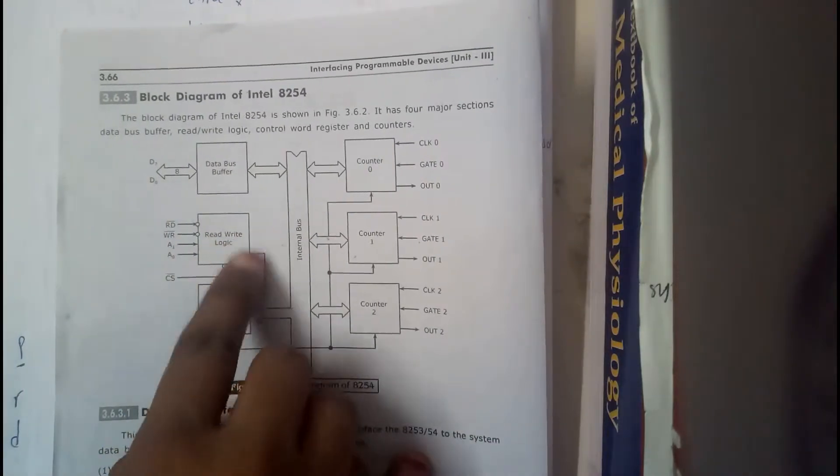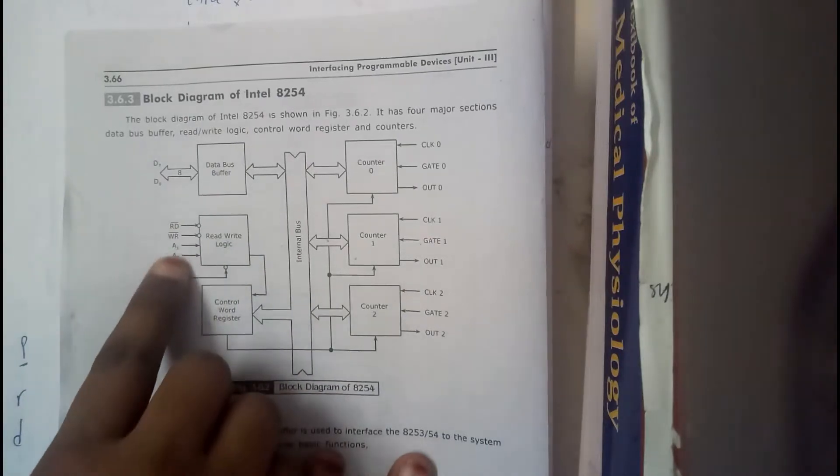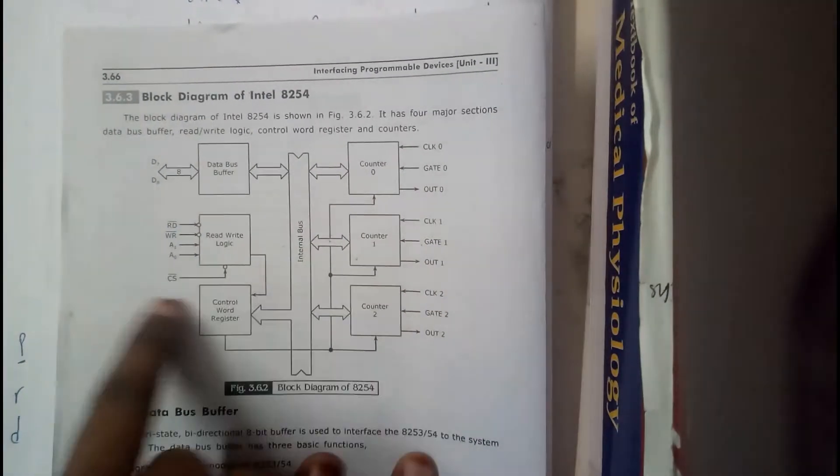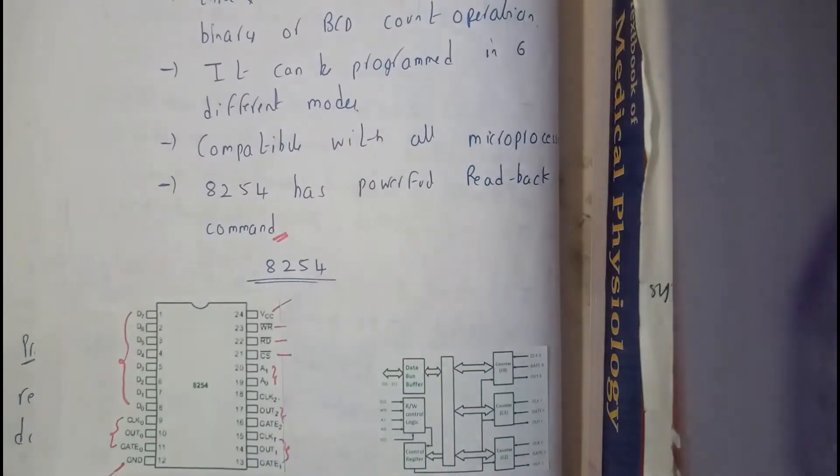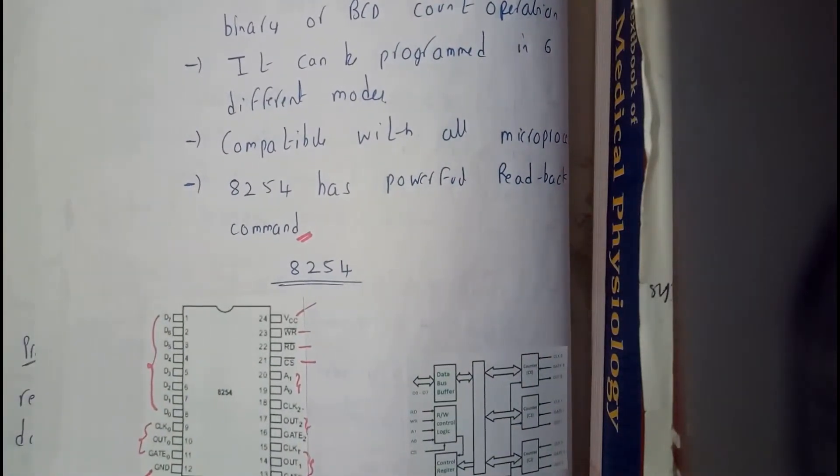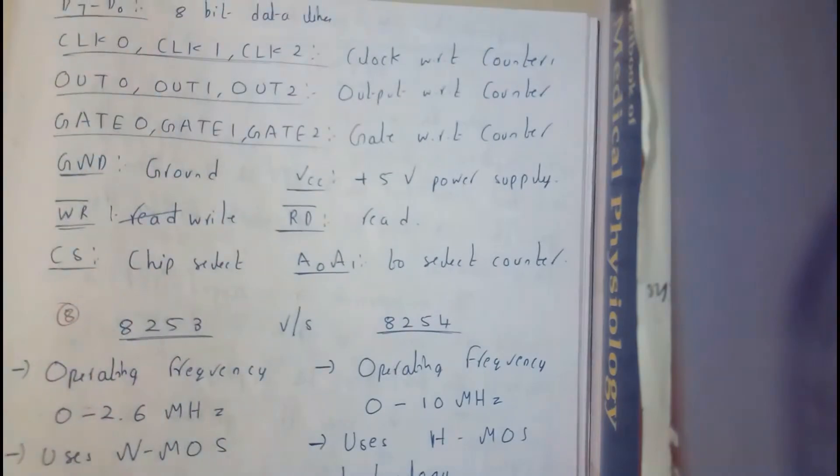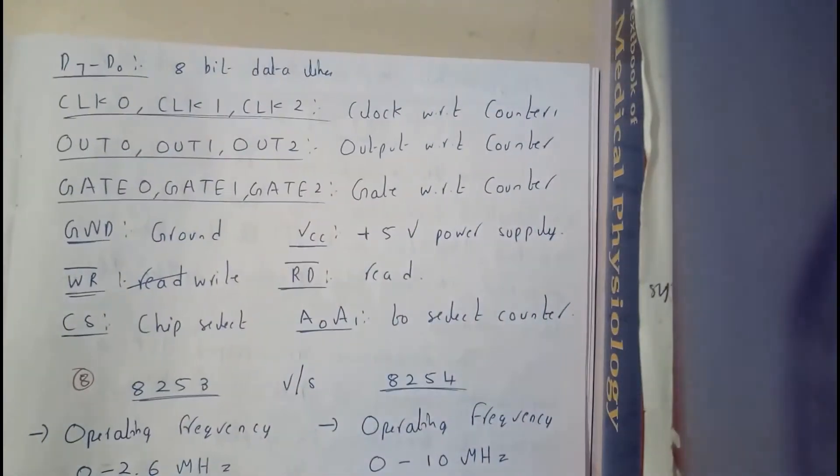That is nothing but D0 to D7. And it is connected to control word and this is connected to read write logic. That will be connected to control word where the operations like read write addresses will be transferred into it. If CS is active low, only then we will be having the access for it. Only then we can do the multiple operations.